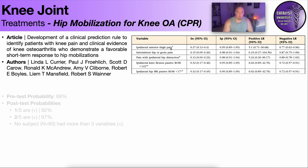Ipsilateral anterior thigh pain; intermittent hip or groin pain — and in the actual paper, numbness was included in this as well, not just pain; pain with ipsilateral hip distraction, meaning pain in the hip, not necessarily pain in the knee.